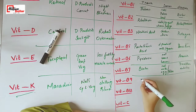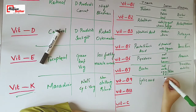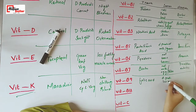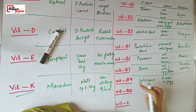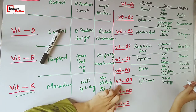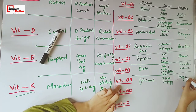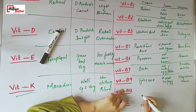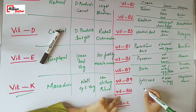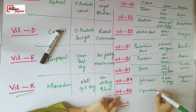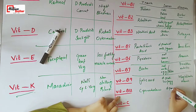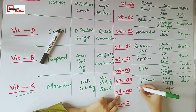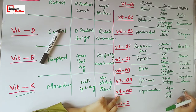The technical name of vitamin B9 is folic acid. Dairy products, liver, sugar, and eggs are rich in vitamin B9. The disease caused by the deficiency of vitamin B9 is megaloblastic anemia. The technical name of vitamin B12 is cyanocobalamin. Dairy products, milk, and beef are good sources of vitamin B12. Megaloblastic anemia is also caused by the deficiency of vitamin B12.